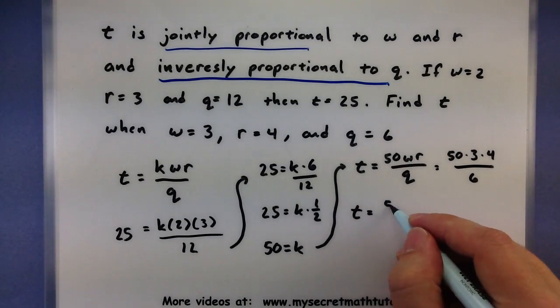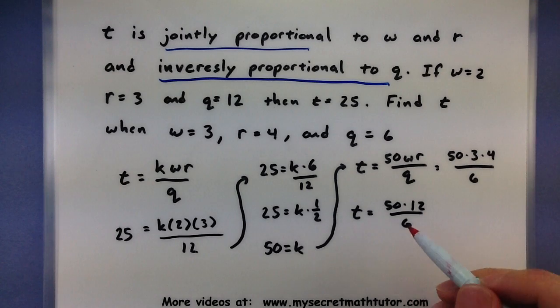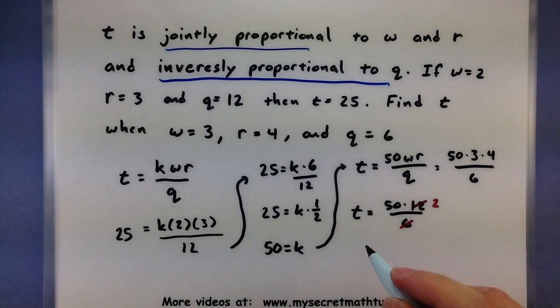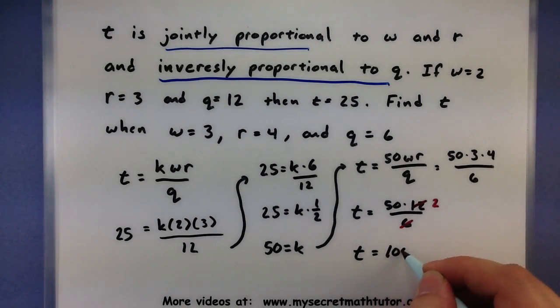So t equals 50 times 12 all over 6. Looks like I can do a little bit of reducing here. 6 goes into the bottom and into the top. So in the end, it looks like t is equal to 50 times 2, or 100.